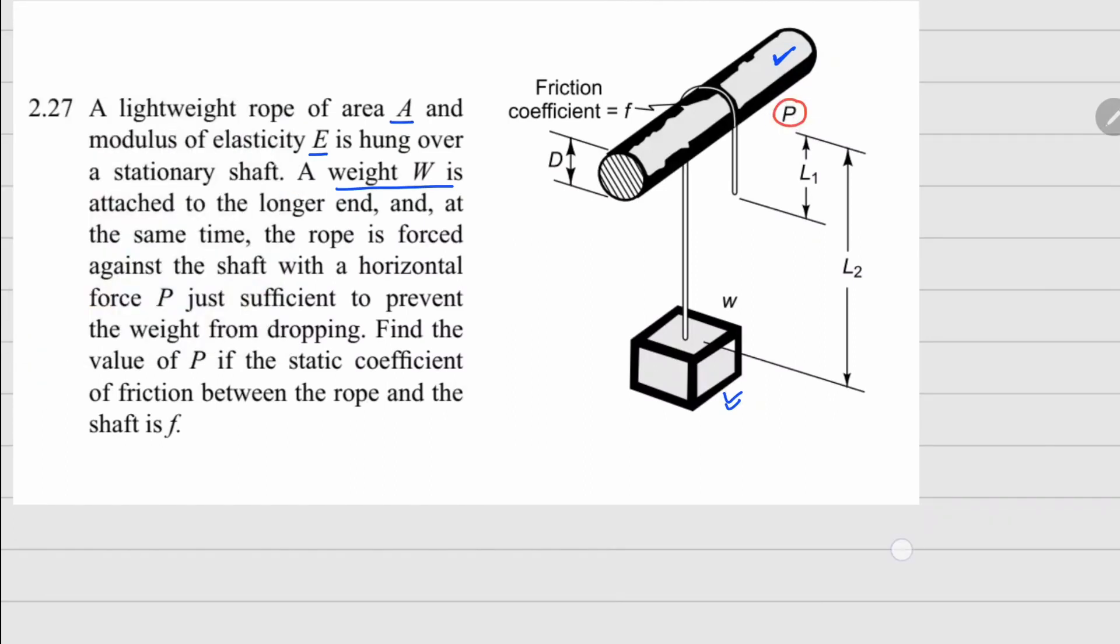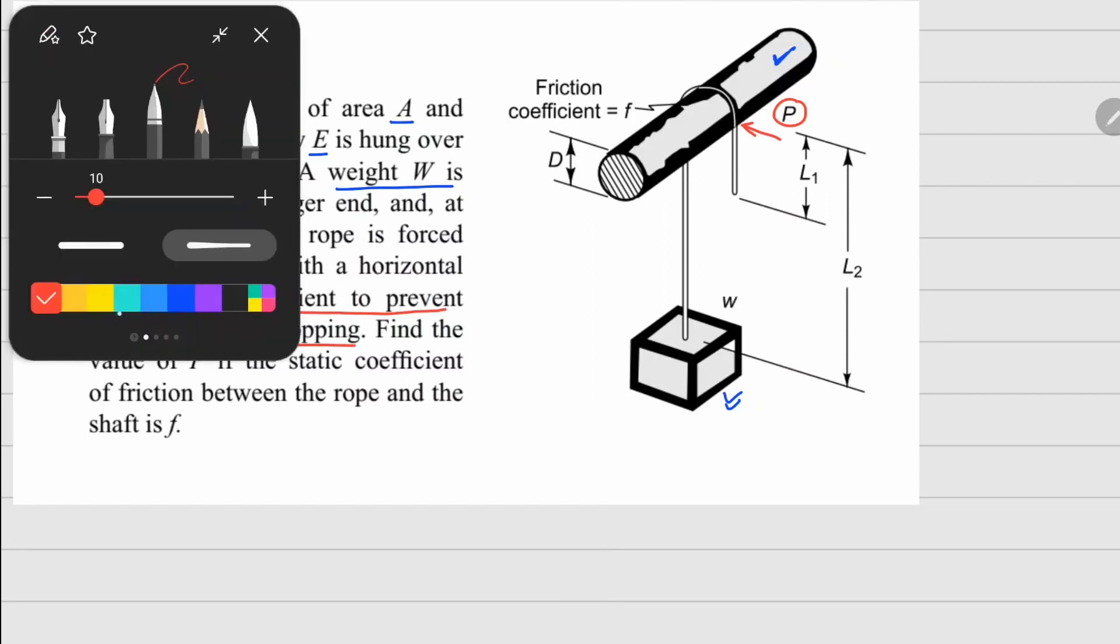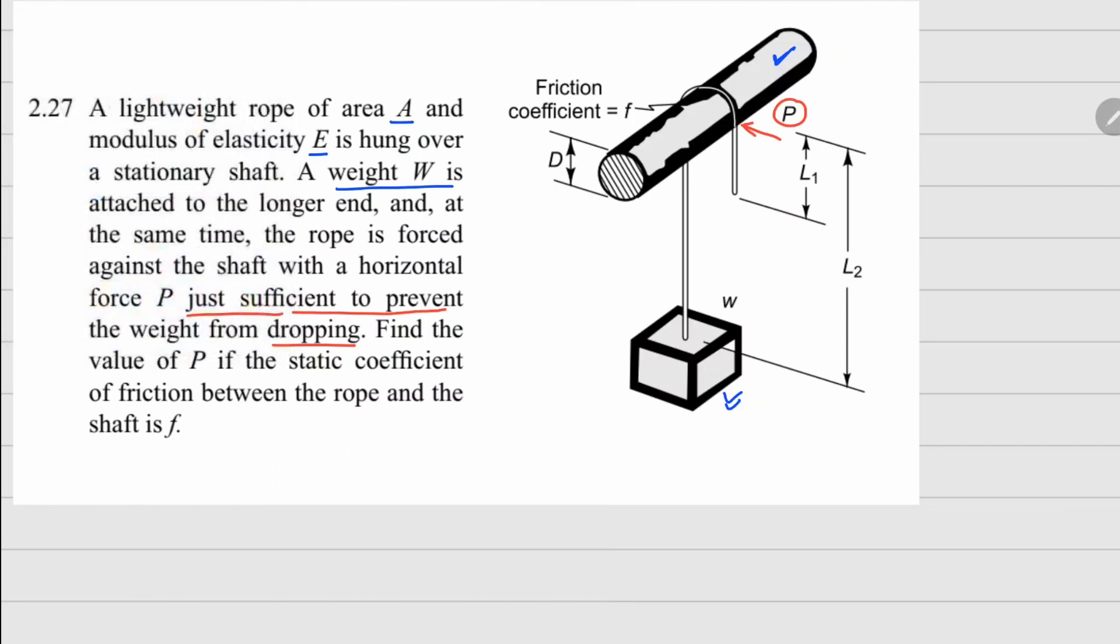At the same time, this rope is forced with a force P which is pushing the rope towards the shaft. We need to figure out the value of P which is just sufficient to prevent the weight from dropping. The coefficient of friction is given. This is a problem where we need to understand the difference between tensions on both sides of this string.